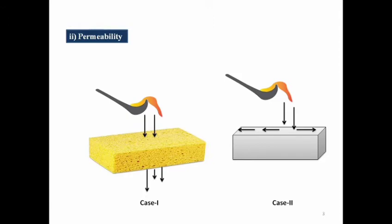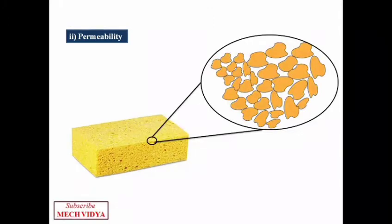To understand why the sponge was able to allow liquid to flow through it, let us examine its microstructure. If we zoom a certain portion of this sponge, you will find that in between individual particles there are a number of voids or pores. This is also called the porosity of that particular sponge material, and it is due to these pores the liquid was able to flow through it. So permeability is the ability of a substance to allow fluid to flow and pass through it.